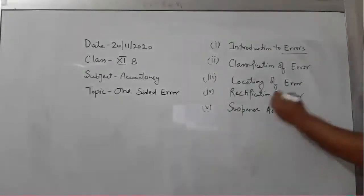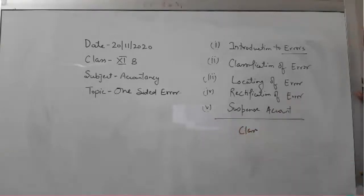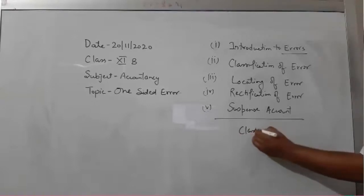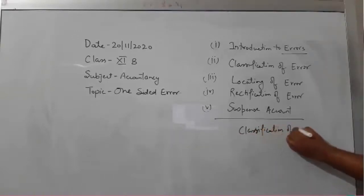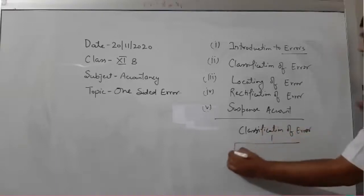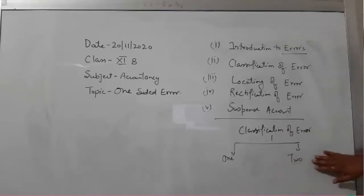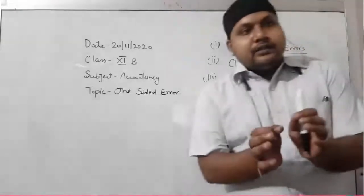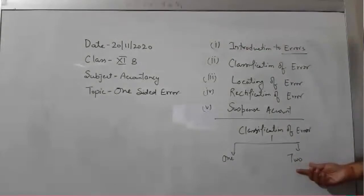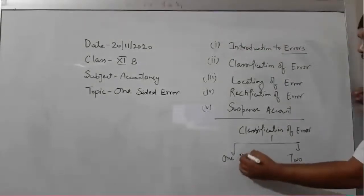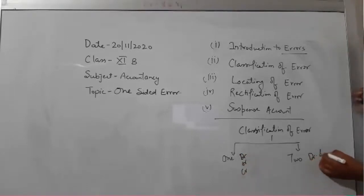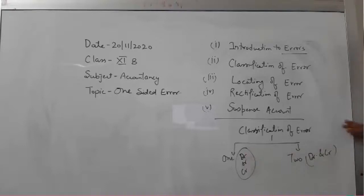Classification of error means how many types of errors can there be? So basically from the accounting point of view, there are basically two types of errors: one-sided error and two-sided error. So if we talk about the classification of errors, errors can be classified into two categories — one-sided and two-sided. One-sided errors are those errors which affect only the one side of the books of account, whereas two-sided errors are those errors which affect two sides of the books of account.